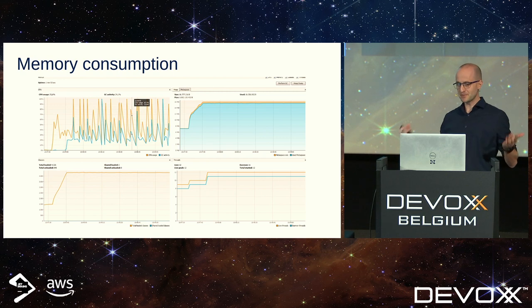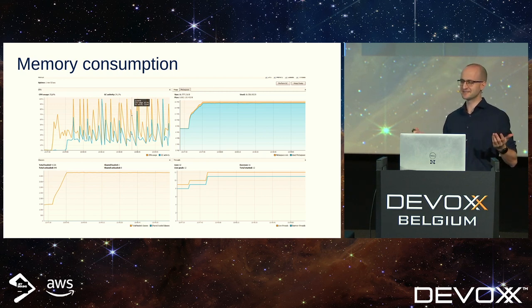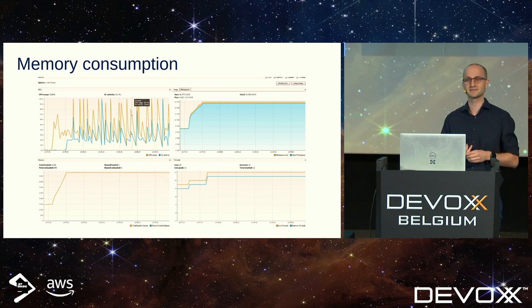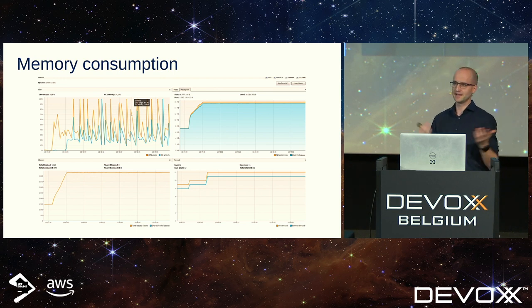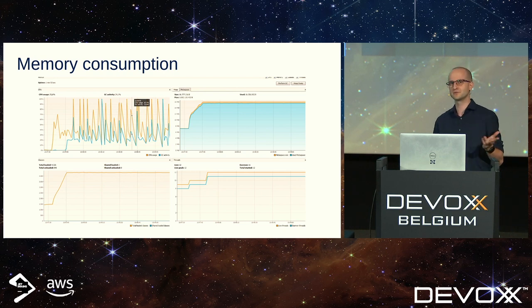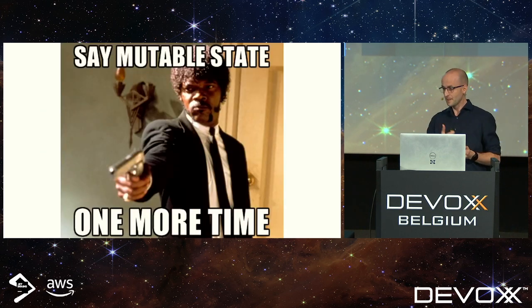Another approach is to keep everything in memory — once you load the state, it handles the next command immediately. That's why event sourcing based on Akka is so fast, because everything is in memory. This technique is called write-through-cache. Because everything is in memory, you can expect out-of-memory exceptions — but out-of-memory exceptions in Java are quite manageable. Just make sure you don't do anything stupid with your state and you should be fine.